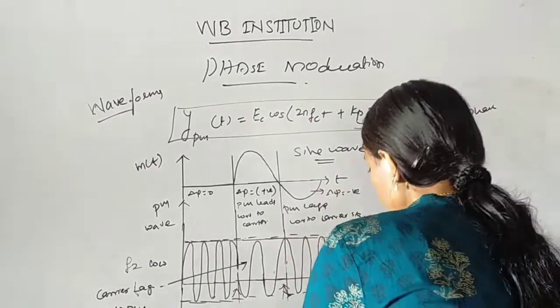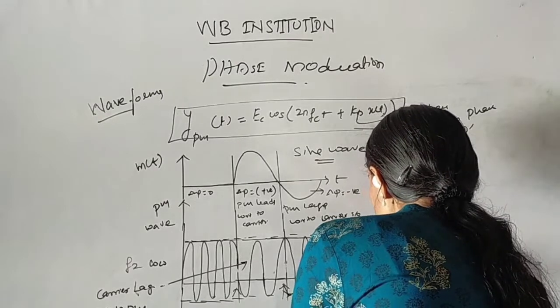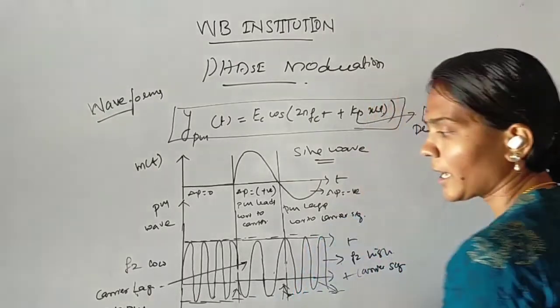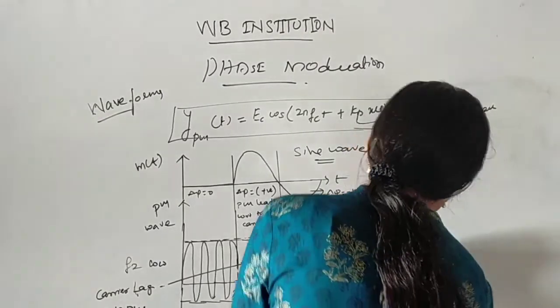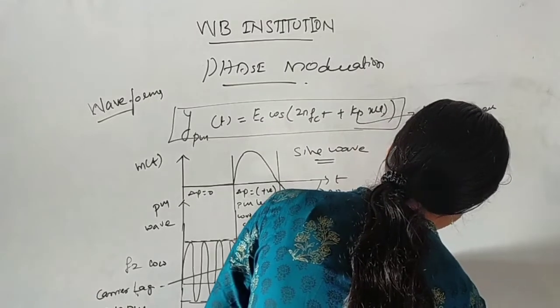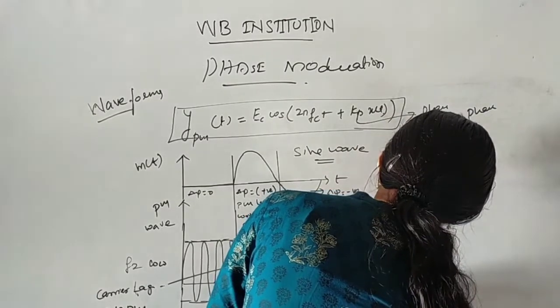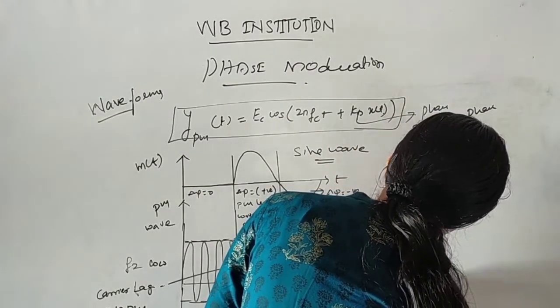When the phase deviation is negative, the carrier signal is lagging with respect to the PM wave.